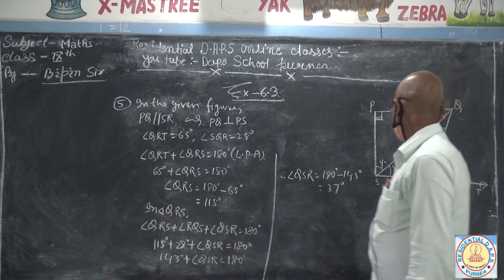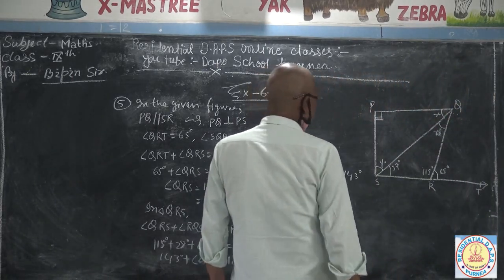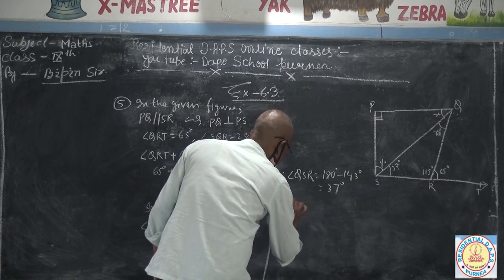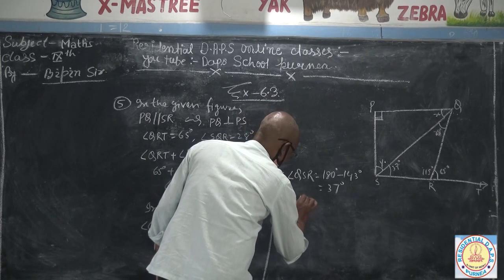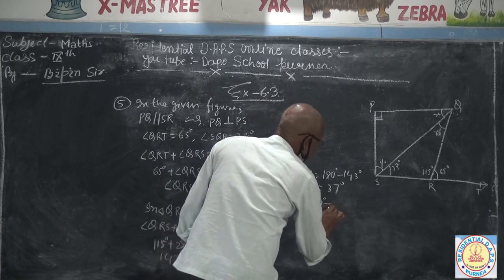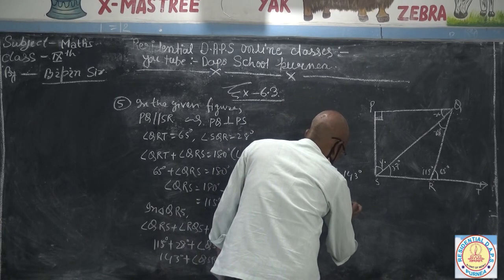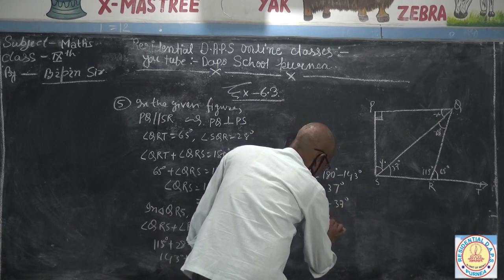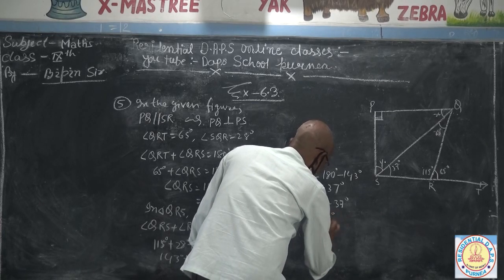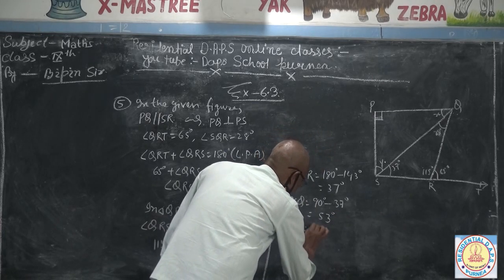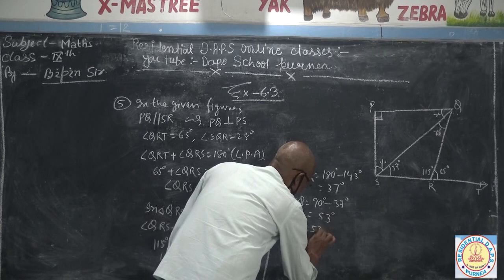Now find angle PSQ. Since PQ is perpendicular to PS, angle PSQ equals 90 minus 37, which is 53 degrees. So Y is equal to 53 degrees.